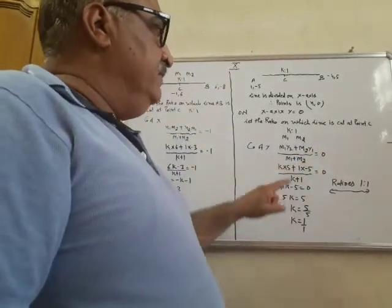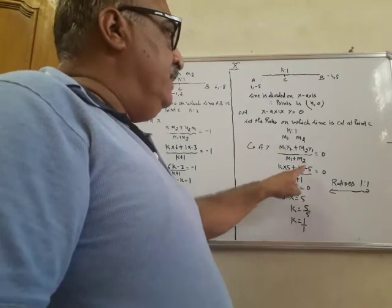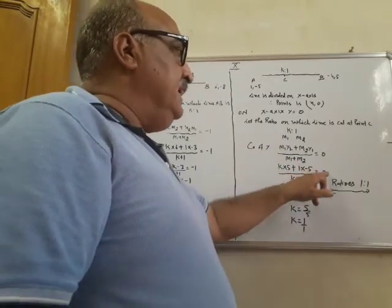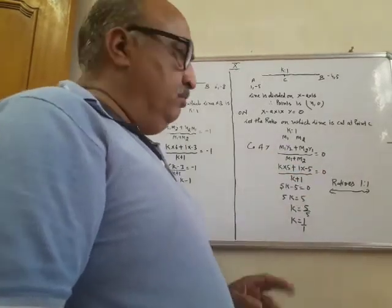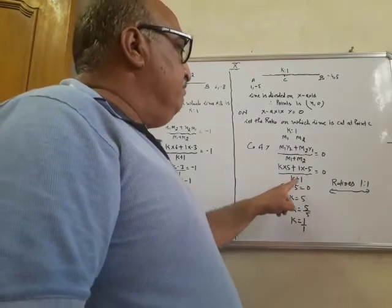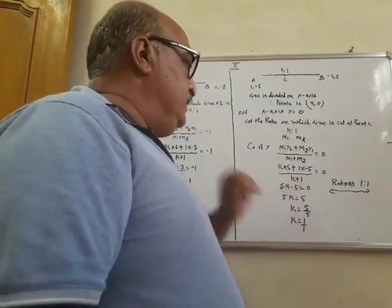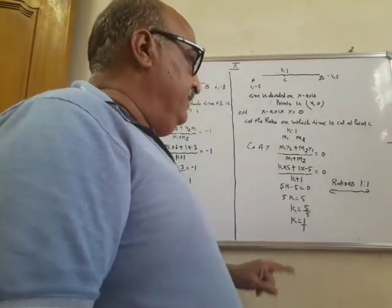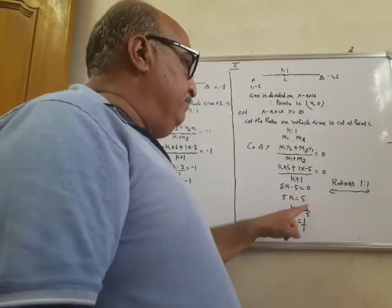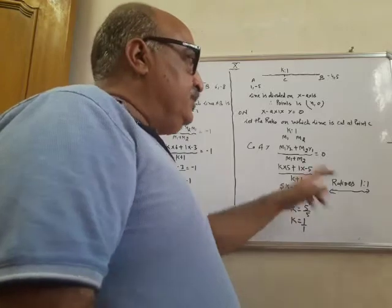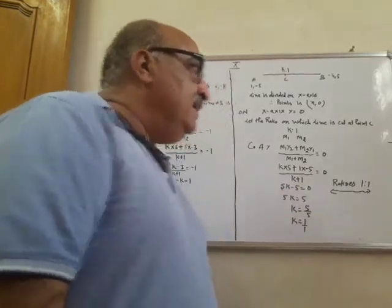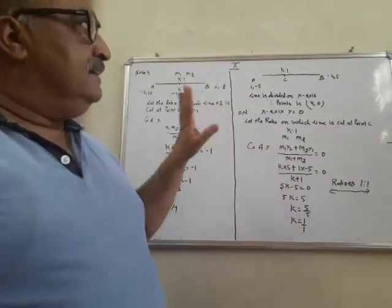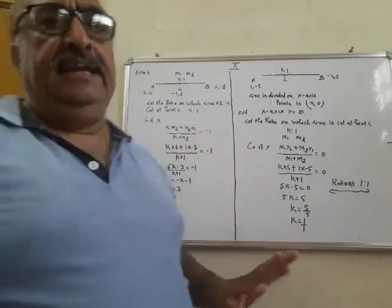K into 5 plus 1 into minus 5, upon K plus 1, equal to 0. So 5K minus 5 equal to 0, 5K equal to 5, K equal to 1. तो यह ratio आगे हमारा 1 ratio 1 है, जिस पर आपकी line कटती है.